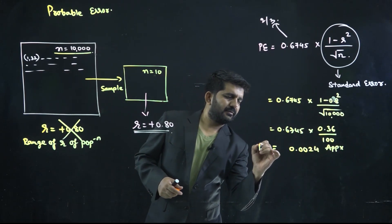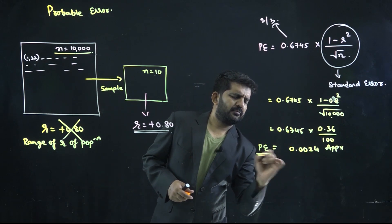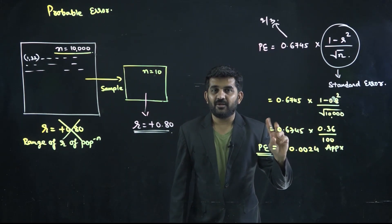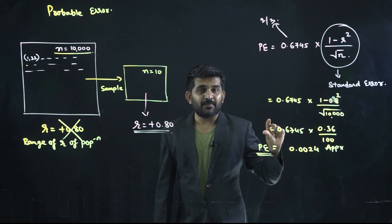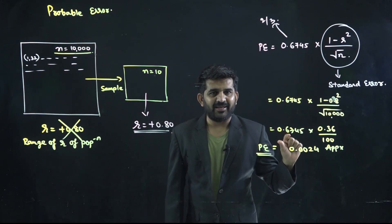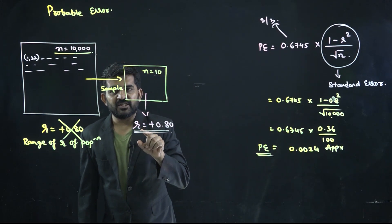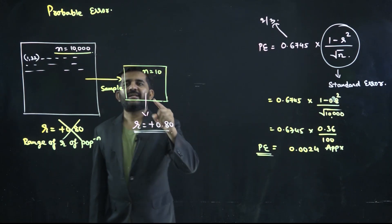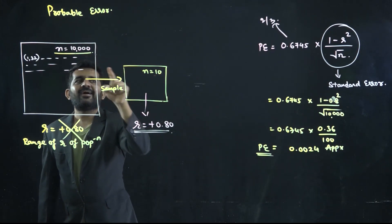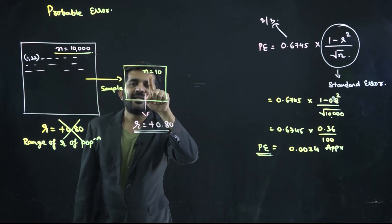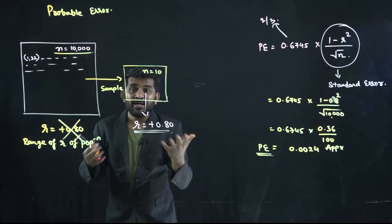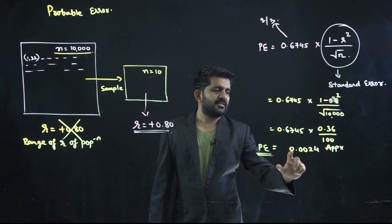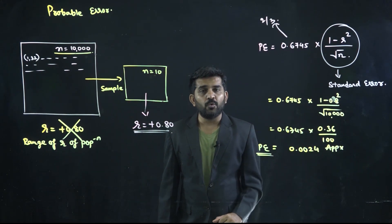This value, 0.0024, is the probable error. This is the probable error while finding out r, because you have not evaluated all 10,000 data — you evaluated only 10 data. So there might be error in this r, and the probable error tells us how much that error is: 0.0024.